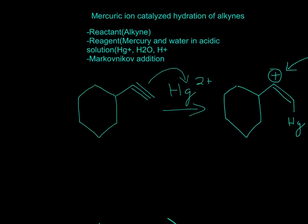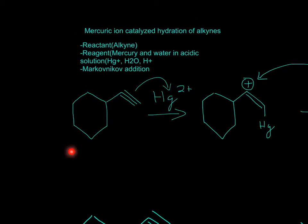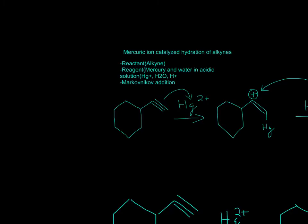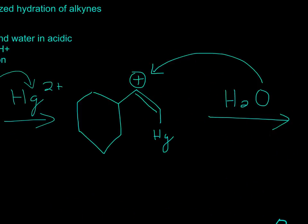We start off with an alkyne. We have Hg2+, and the triple bond attacks it. A bond forms between the alkyne, now it's a pi bond, and the Hg.